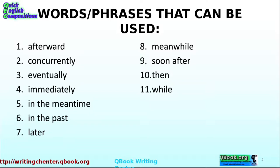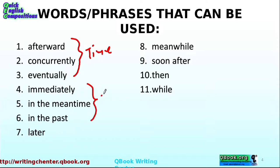Because of narration's emphasis on telling a story, you often use words like these: afterward, concurrently, eventually. You can see that these words are very time-oriented, because you're trying to set up a time. When did this happen? Then after this happened, something else happened. Immediately, in the meantime, in the past, and later. These are all setting up that time frame.